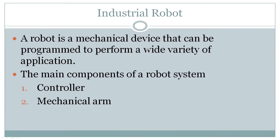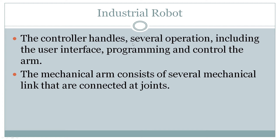A robot is a mechanical device that can be programmed to perform a wide variety of applications which are quite difficult to achieve with human beings under certain environmental conditions — that level of accuracy we can easily achieve with a robot. The major components of a robotic system are the controller and the mechanical arm. The controller handles several operations including the user interface, programming and control of the arm. The mechanical arm consists of several mechanical links connected together.